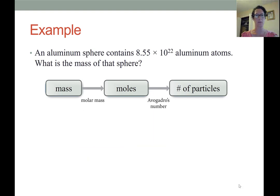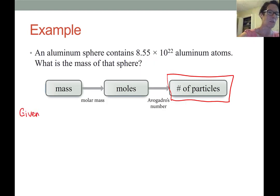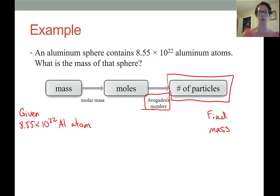An aluminum sphere contains 8.55 times 10 to the 22 aluminum atoms. What is the mass of that sphere? If we read this word problem, we'll see that the value we're starting with is the number of particles. So we're going to first enter that in as our given. We're given that we have 8.55 times 10 to the 22 aluminum atoms, and what we're being asked to find is the mass of that. The conversions that we're going to use are, of course, Avogadro's number to get from number of particles to moles, and then molar mass to get from the moles to the mass.